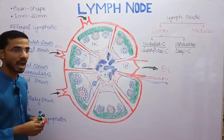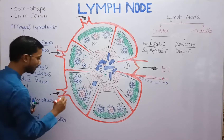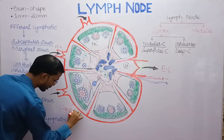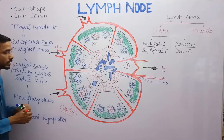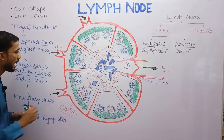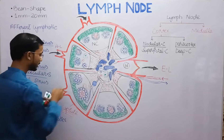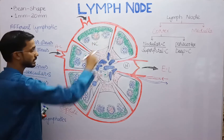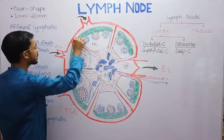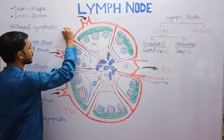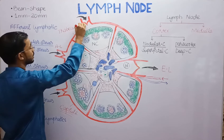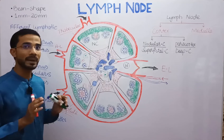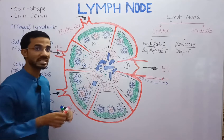There is a connective tissue over the lymph node which is called the capsule. This is the capsule region, and there are different invaginations occurring through the capsule. These invaginations are the trabeculae, and when they move into the medullary region, they give off several branches.